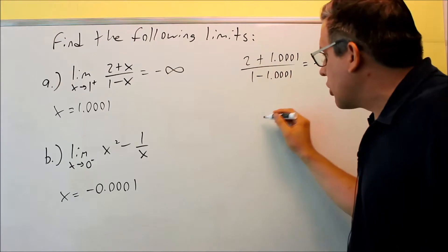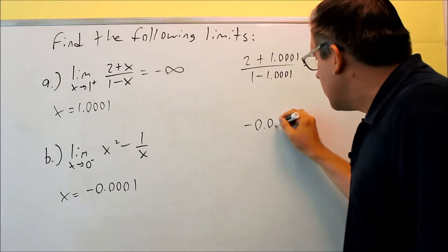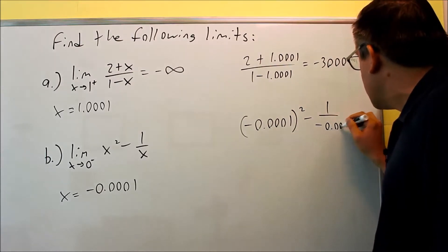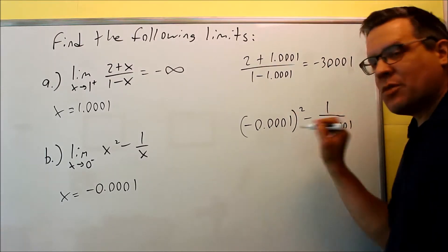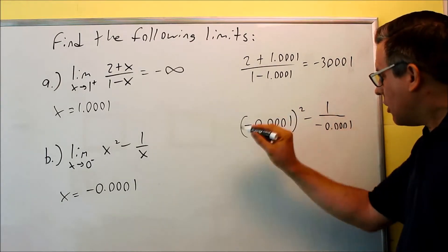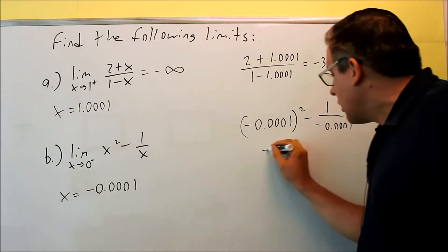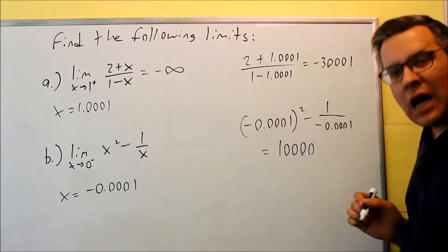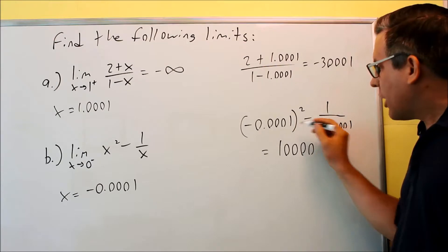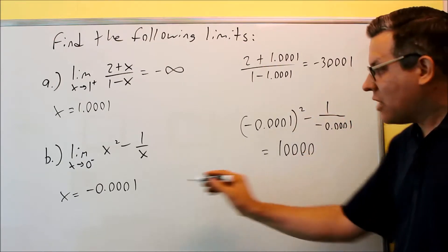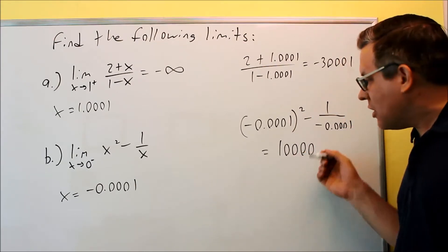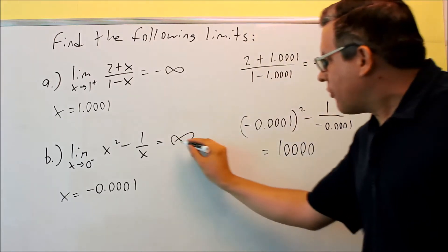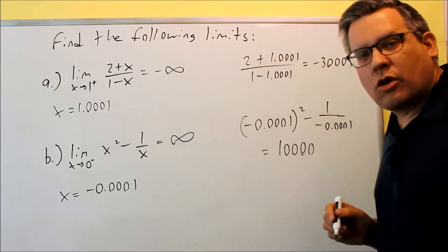I'm going to do the scratch work: (−0.0001)² − 1, all over −0.0001. I want to simplify this and see what kind of number I get. If I put that in my calculator and square it all out, my answer is going to be 10,000 — a very large positive number. If I were to add more zeros to my test number, I'd get even more zeros here, meaning this is going to positive infinity. So the first one goes to negative infinity and the second one goes to positive infinity.